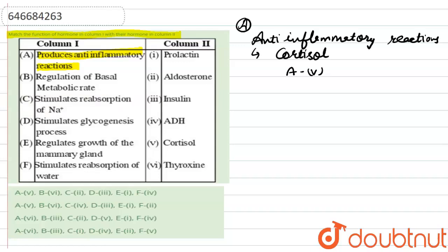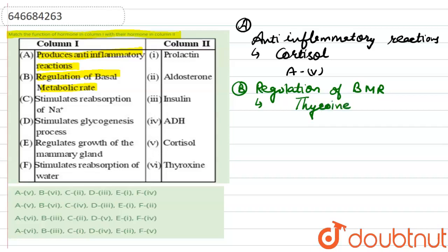Moving to the second option: regulation of basal metabolic rate (BMR). The hormone responsible for regulation of BMR is thyroxine, which is secreted by the thyroid gland. So this corresponds to the sixth option.